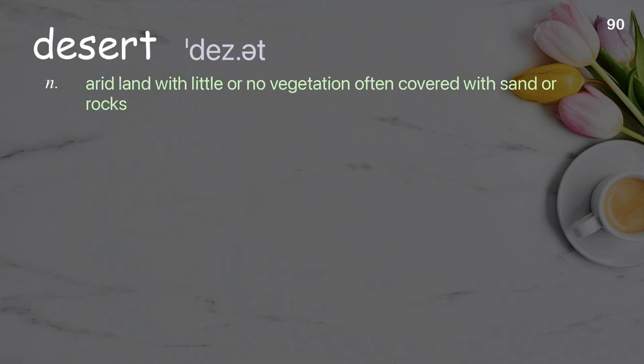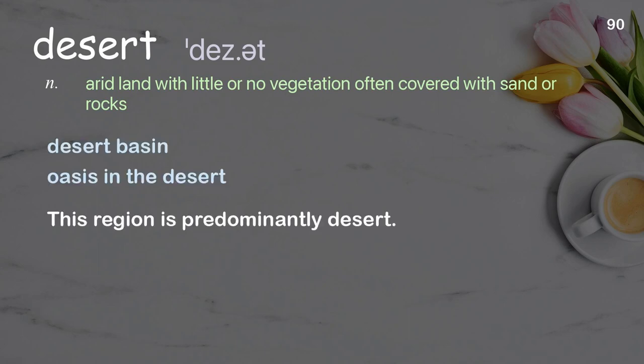Desert: arid land with little or no vegetation, often covered with sand or rocks. Examples: desert basin, oasis in the desert. This region is predominantly desert.